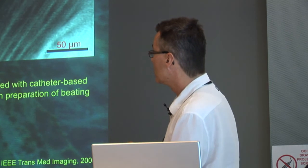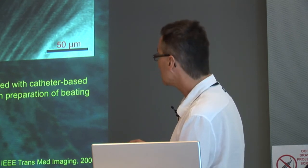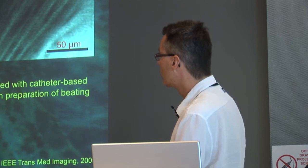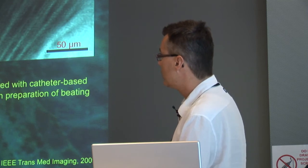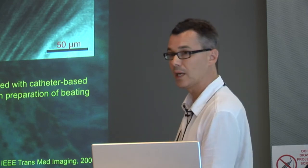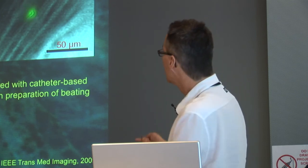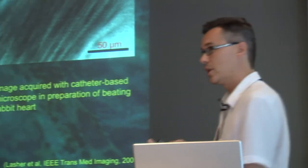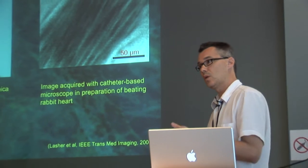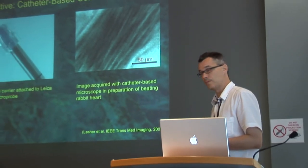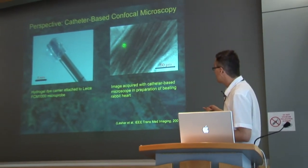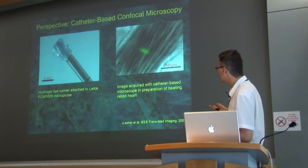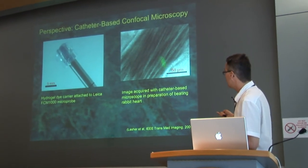Here again you see the dye carrier — that's the dark layer on this microprobe. There is a bigger microprobe going down to 300 micrometer thickness. The images obtained are not as perfect as with standard confocal, but they nevertheless give insights into, for instance, cell width that could be extracted from them.